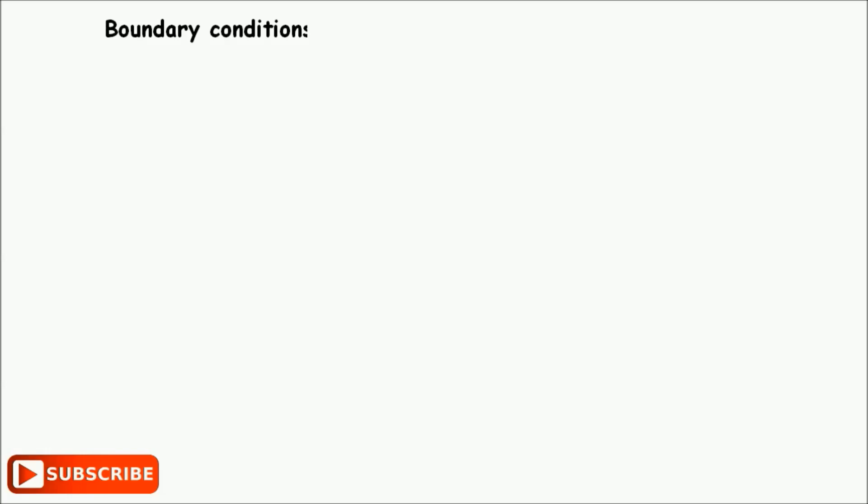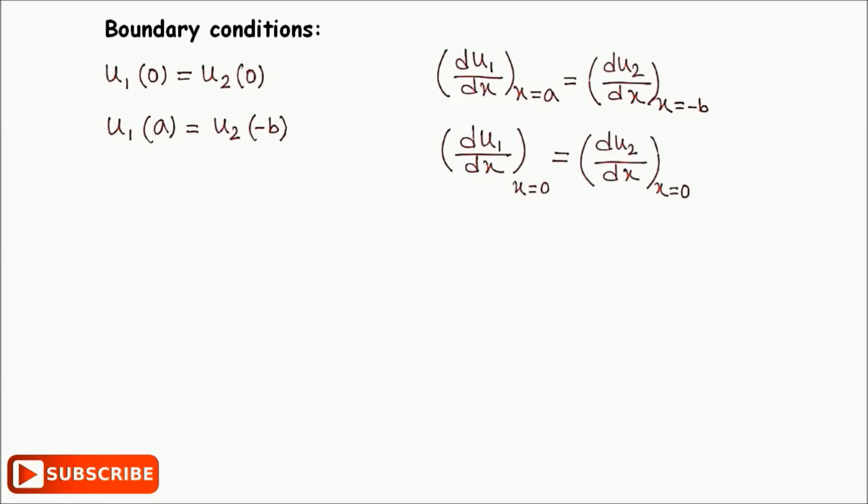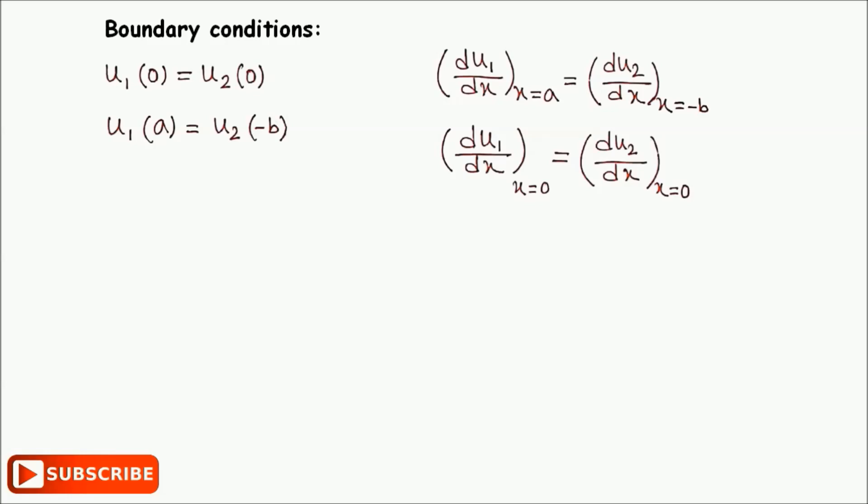These constants can be determined from the following boundary conditions. If we take the four boundary conditions, we create four equations. Applying these boundary conditions to the previous two equations, we obtain the following four linear homogeneous equations.